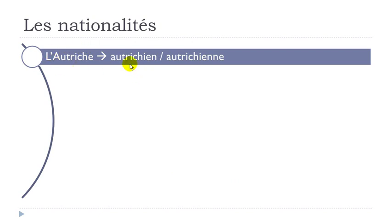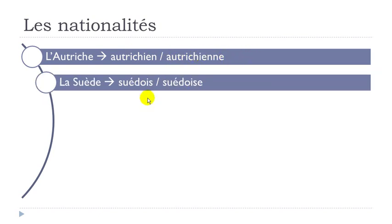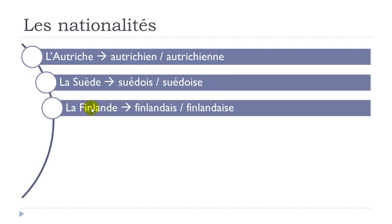L'Autriche — autrichien, autrichienne. Same thing here: you get E and then double N, you open the E — autrichien, autrichienne. La Suède — suédois, suédoise. La Finlande — finlandais, finlandaise.